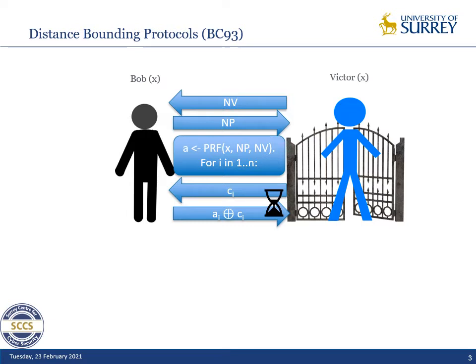Here we have an architecture that is common to a lot of protocols. The verifier Victor sends a nonce NV to Bob. Bob replies with a nonce NP, and then both of them compute the output of a PRF — a pseudo-random function — keyed with X on the two nonces. This output is stored in a bit vector A.